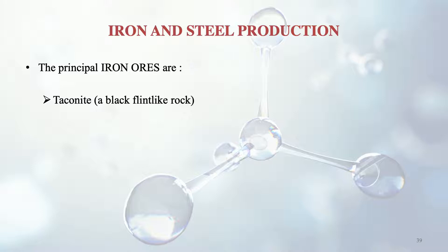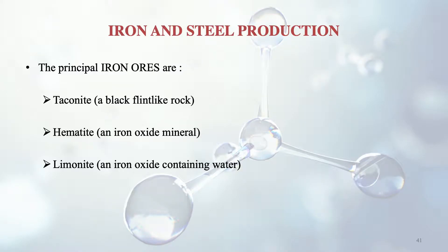The principal iron ores are: taconite, a black flint-like rock; hematite, an iron oxide mineral (Fe₂O₃); and limonite, also an iron oxide but containing water — so the difference between hematite and limonite is that one is iron oxide without water while limonite contains water. Since iron ore is not pure iron, it needs processing. The concentrated iron ore is referred to as beneficiated, and some iron-rich ores are used directly without pelletizing.